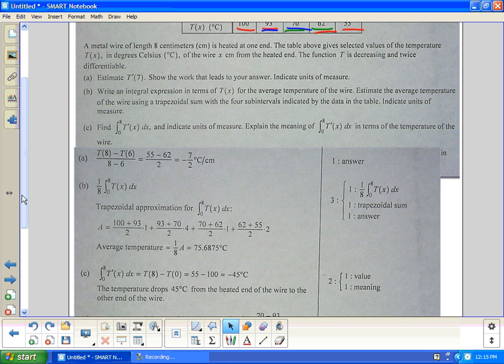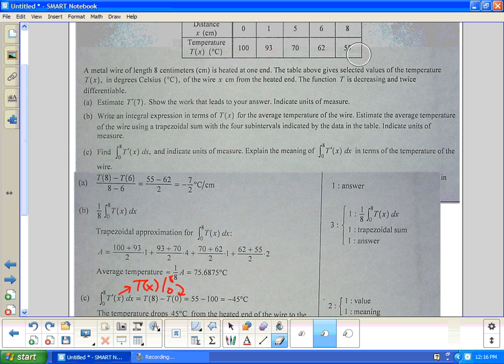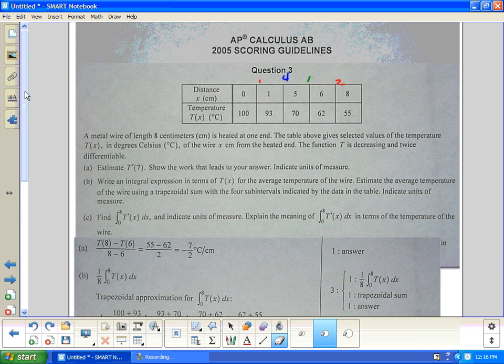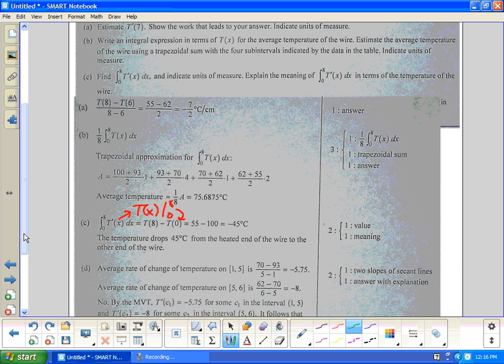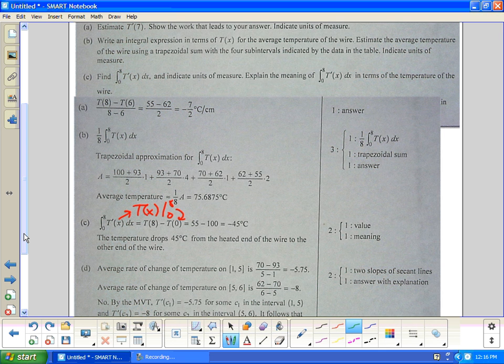We're going to integrate T' from 0 to 8. The integral of T' is simply, they even skip this stuff, they don't show it, it's going to be T(x) from 0 to 8. That's great. And then that shows T(8) - T(0). So that's the answer. We'll take the last answer, which is 55, up from the table. I'm going up to the table here. I erase those numbers at the top and you don't need those. We just pick this and this, because that's the values you need. Take those down and you do the math. You get -45 degrees. And what's that mean? Temperature drops 45 degrees from the heated end of the wire to the other end of the wire. That's what it is.